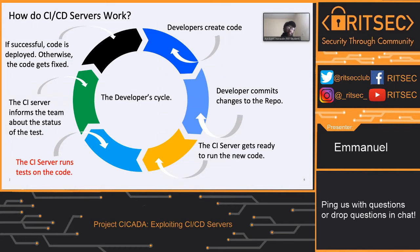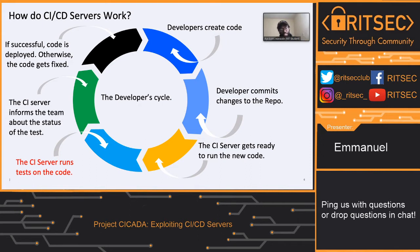This is the developer cycle as I've seen it. A developer creates code and commits to the repo. When they push, for instance if using Travis, they need a Travis YAML file which triggers a CI server to get ready to run that code. The code gets executed on that server, which informs the team about the test status. If it's good, it deploys to production; if not, it goes back to testing and the developer has to write and test the code again. The main part I was targeting was where you can run your code on CI servers.